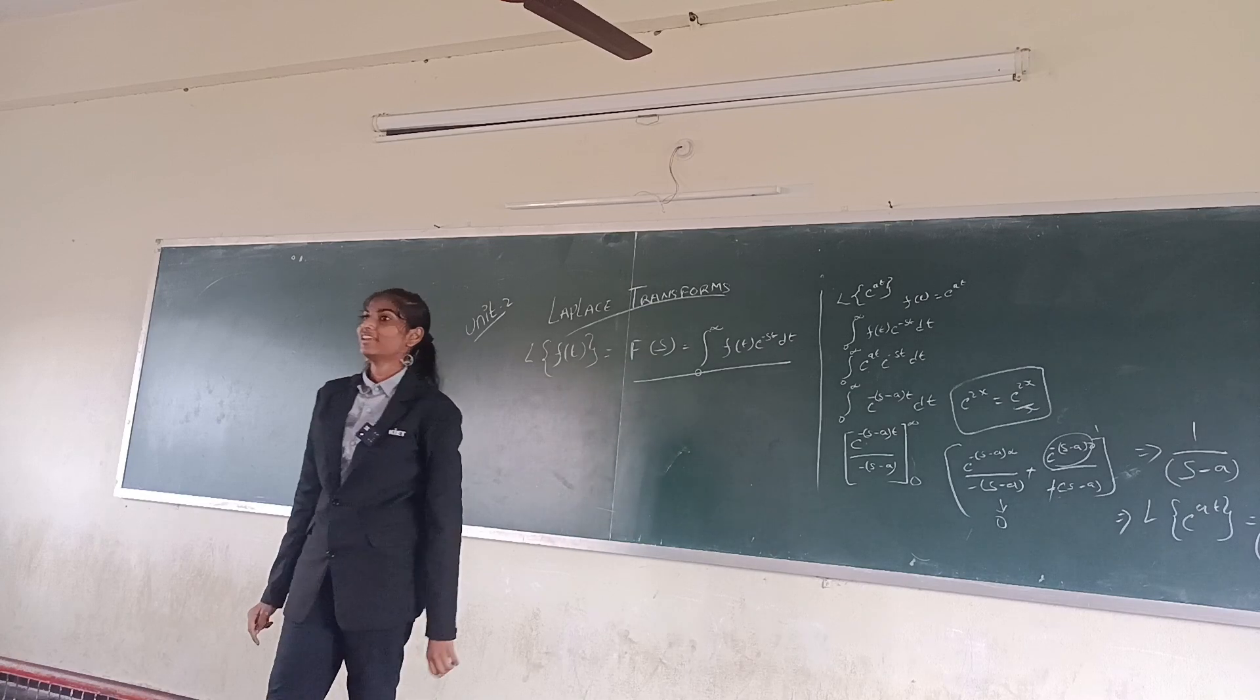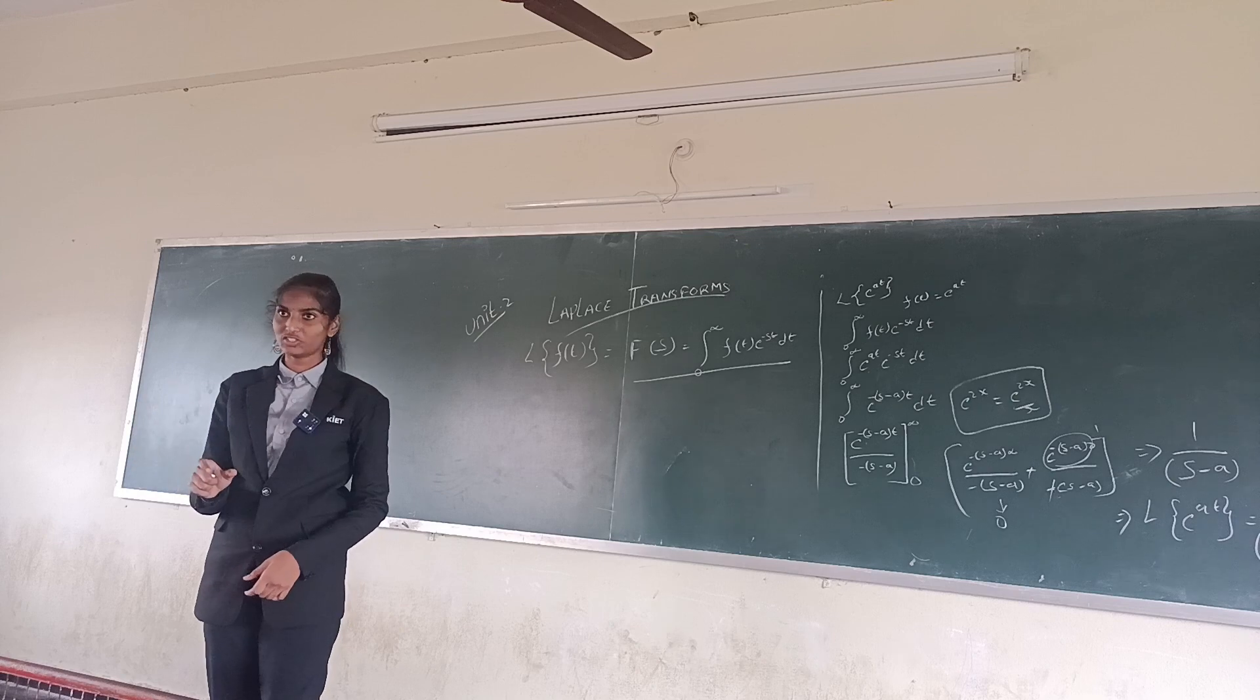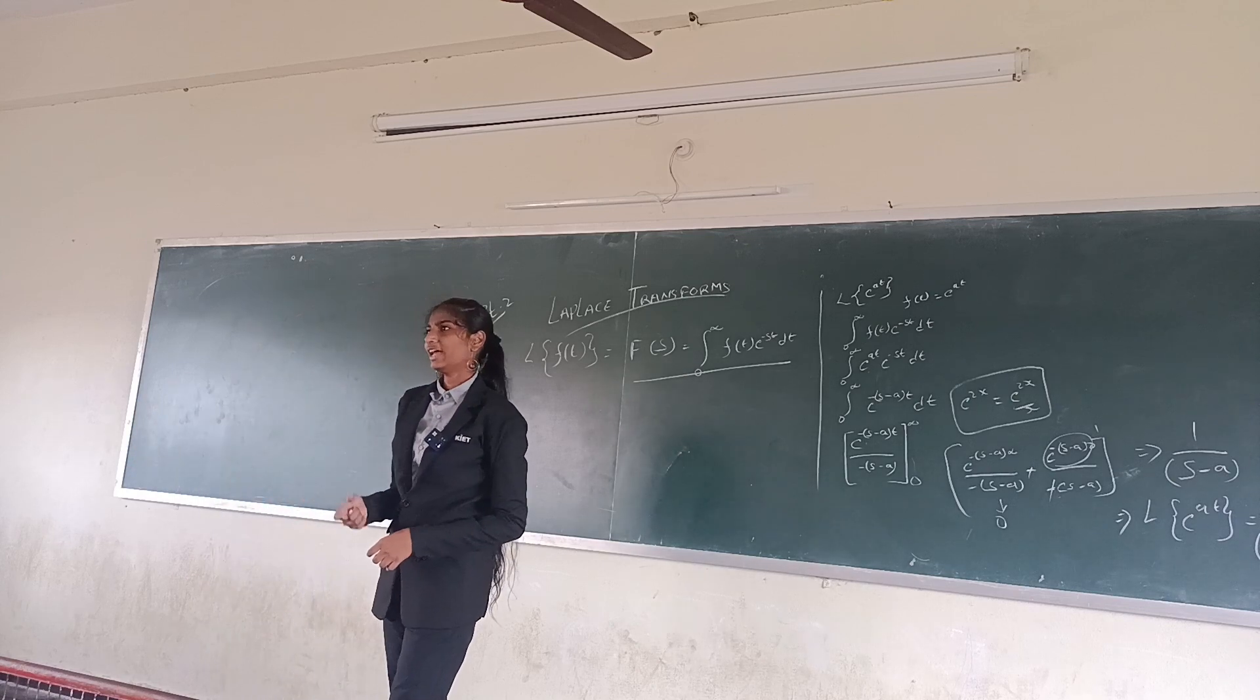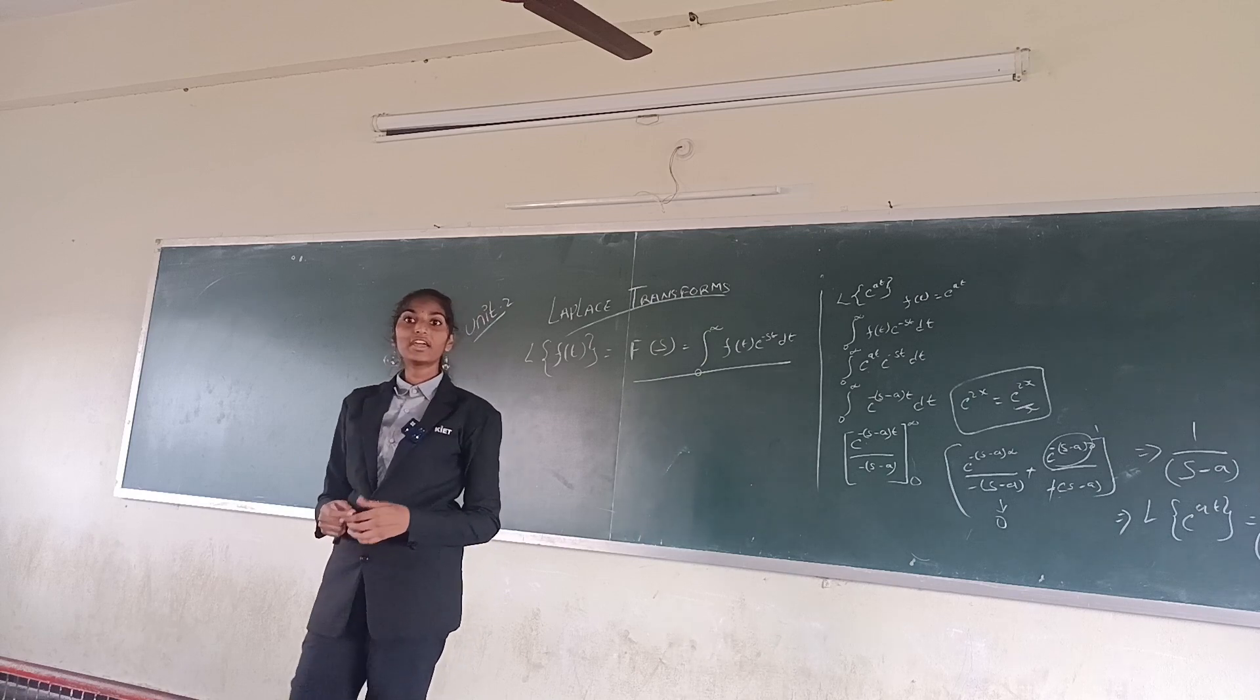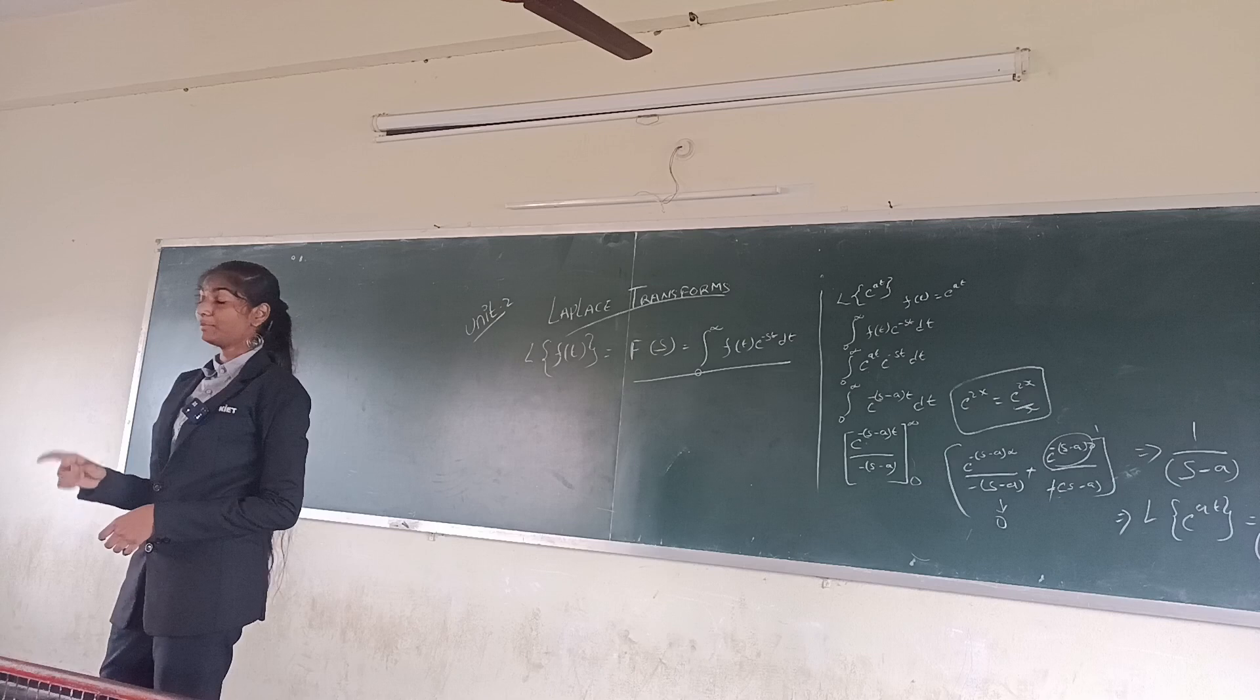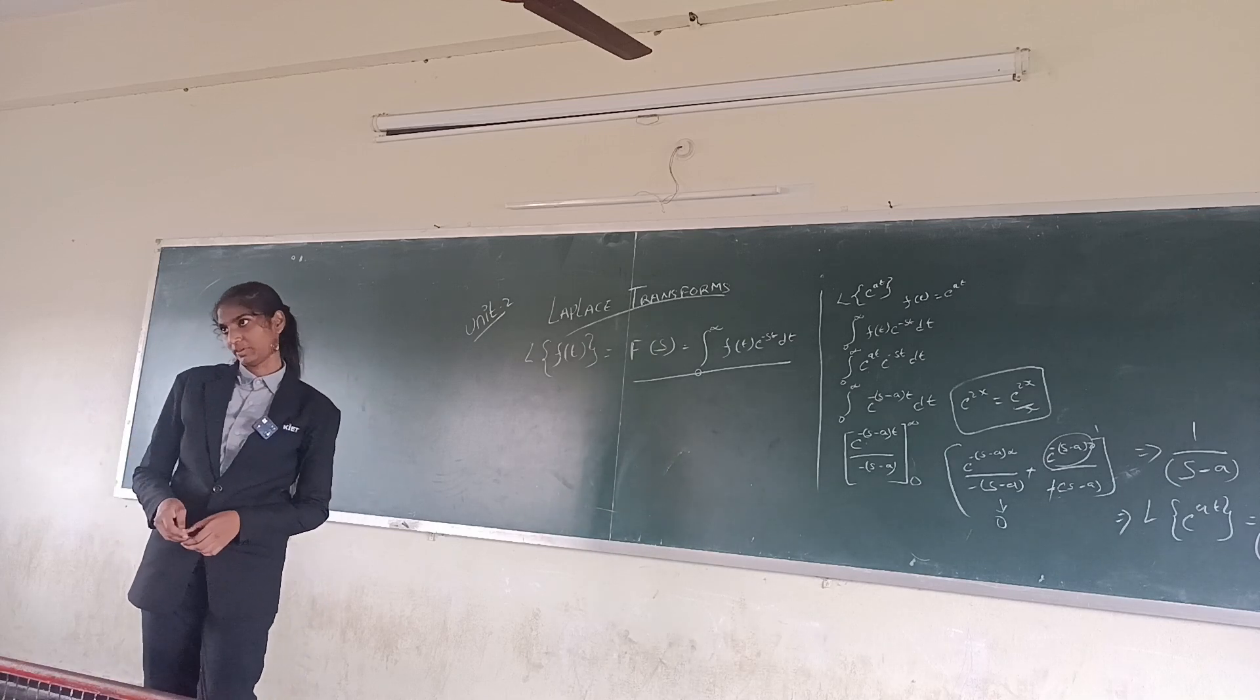What is artificial intelligence? The simulation of human intelligence processes by a machine, especially a computer system. Or we can also call it man-made intelligence - a machine which can think and act like a human or even better than a human.